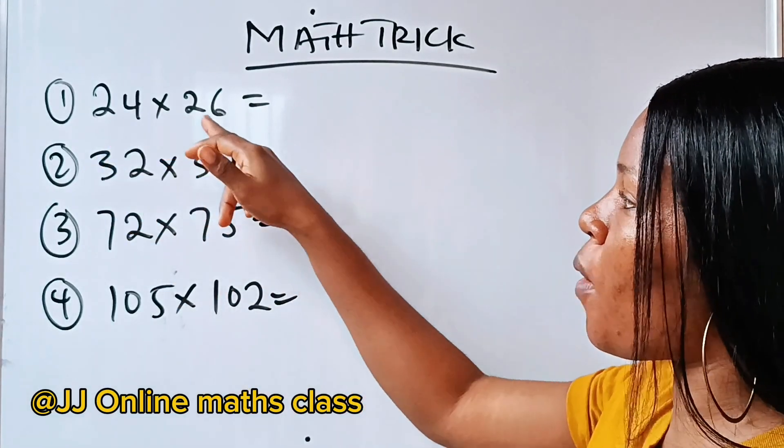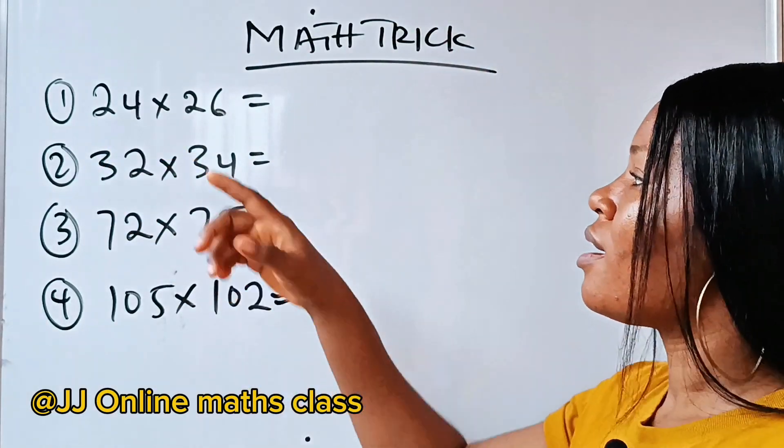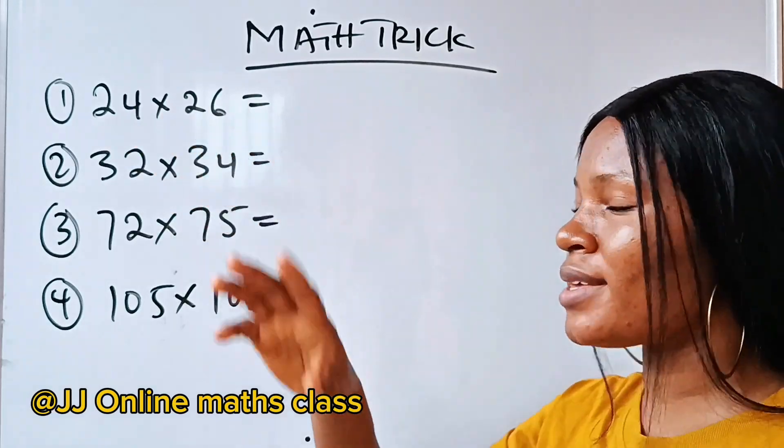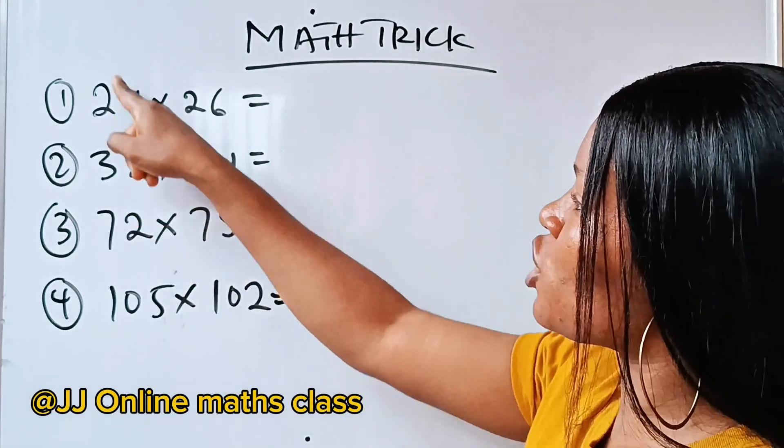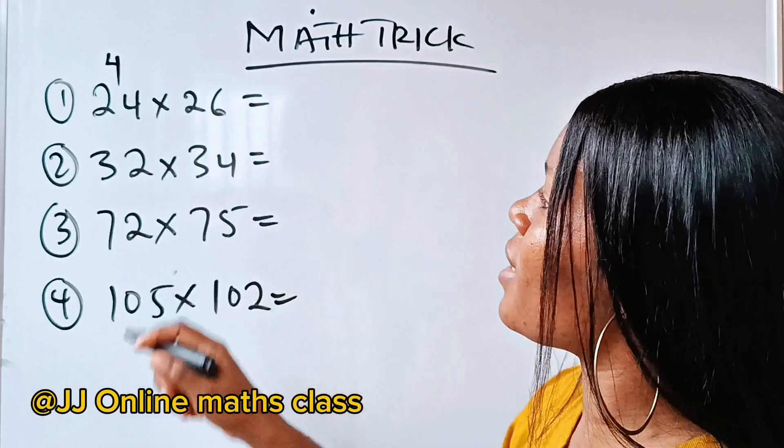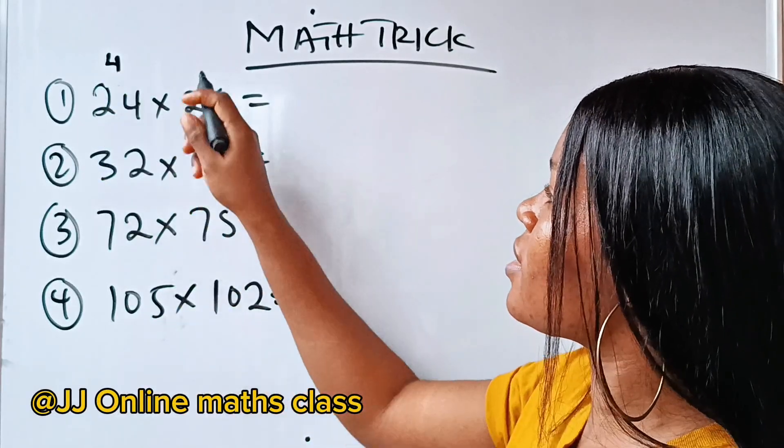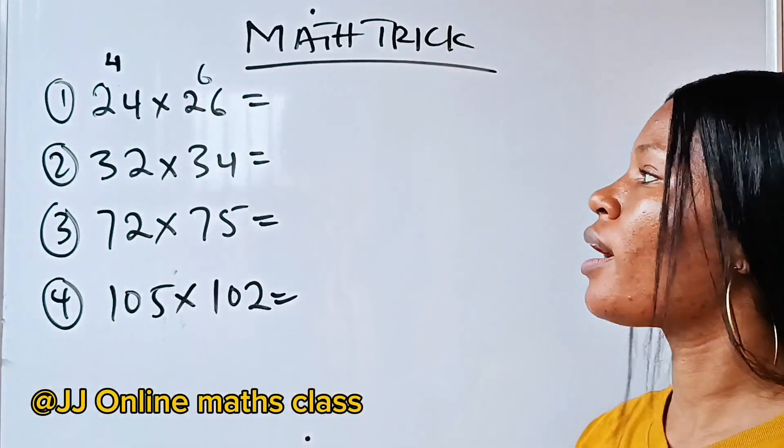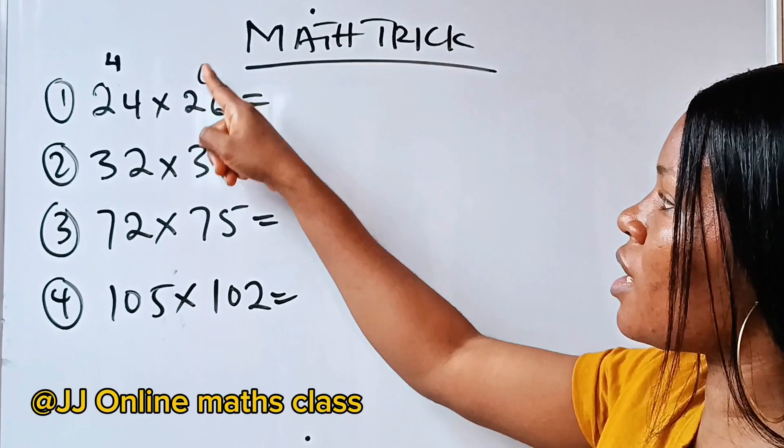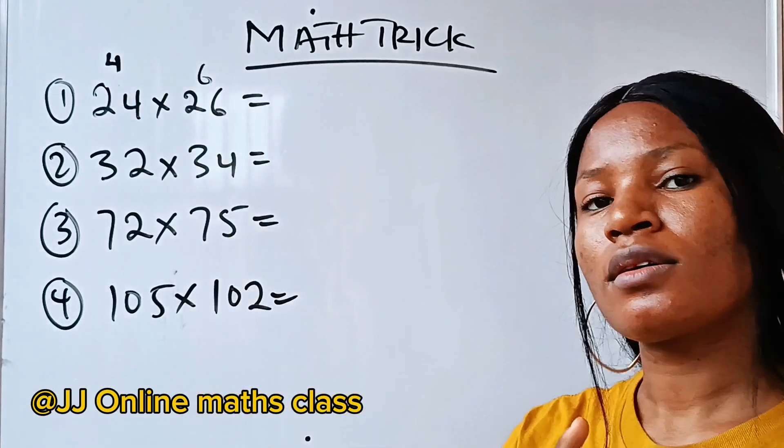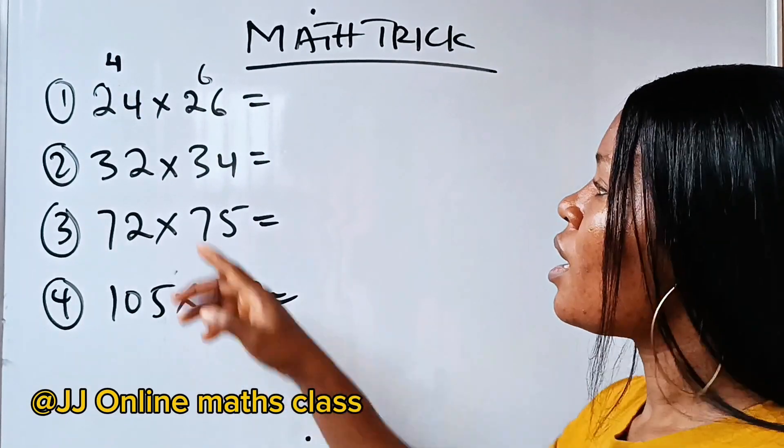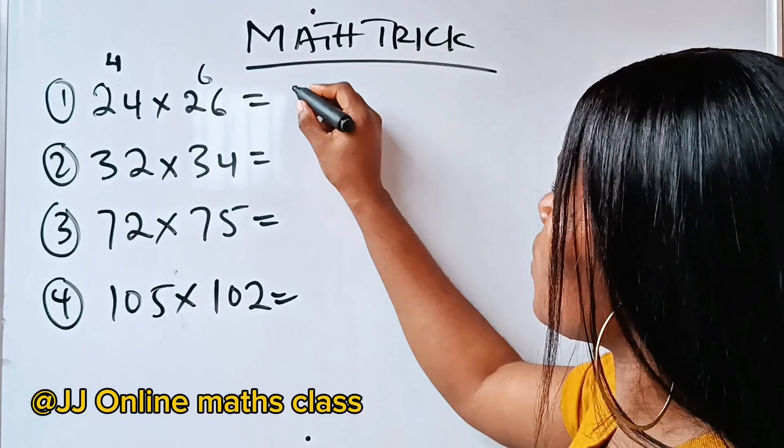we are asked to multiply 24 by 26. We have 2, we have 2, right? What we need to do is, we have extra 4 for this one, and we have extra 6 for this one. So we do 24 plus 6 or 26 plus 4. Both of them will give you the same thing. Now, 24 plus 6 will give us 30.